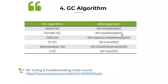You have to pay proper attention to garbage collection — what kind of algorithm you are choosing and what supplemental settings you are passing. In terms of garbage collection algorithms in OpenJDK, there are six: Serial, Parallel, CMS, G1, Shenandoah, and ZGC.